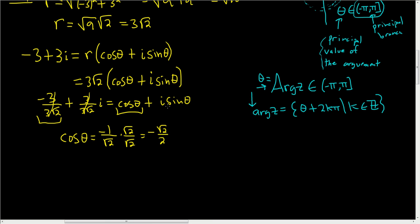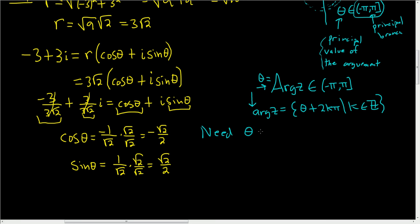Likewise, the imaginary parts must be equal, so sine of theta equals 1 over the square root of 2. Rationalizing that gives sine theta equals square root of 2 over 2. We need theta in the principal branch — the interval negative pi to pi — such that both of these equations hold simultaneously.